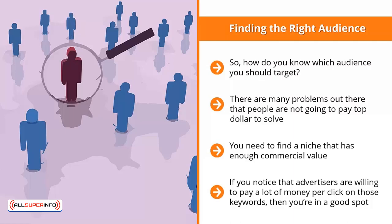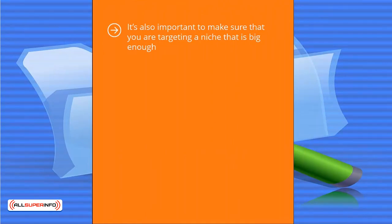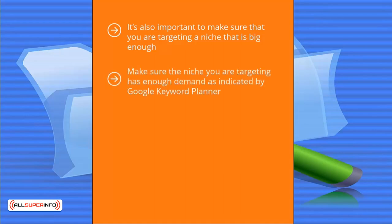People are willing to pay a significant amount of money to solve problems related to your niche. It is also important to make sure that you are targeting a niche that is big enough. For example, there are lots of advertisers willing to pay more than $20 per click for structured settlement keyword traffic, but the volume of searches for that niche is actually quite low. Make sure the niche you are targeting has enough demand, as indicated by Google Keyword Planner, which tells you both the cost per click and the estimated volume of searches for related keywords. You are looking for a nice combination of decent commercial value with decent traffic volume.